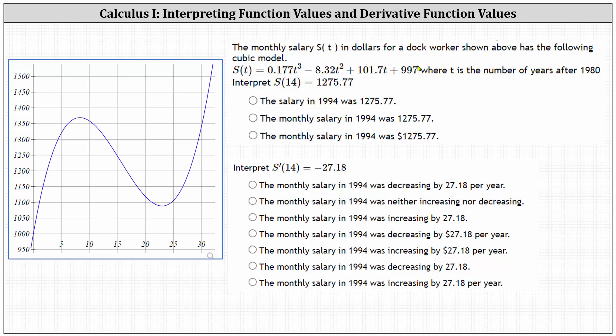Let's begin by labeling the axes. The vertical axis is s of t, which is the monthly salary in dollars. The horizontal axis is t, which is the number of years after 1980.